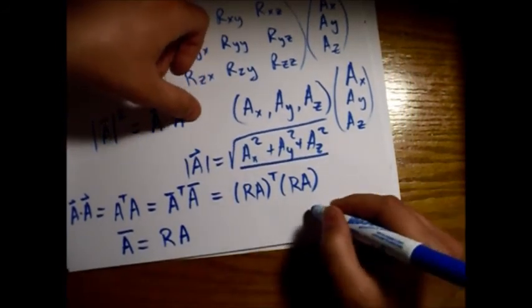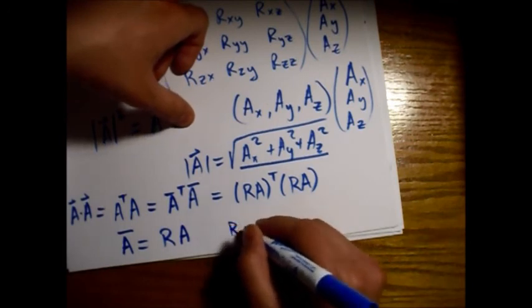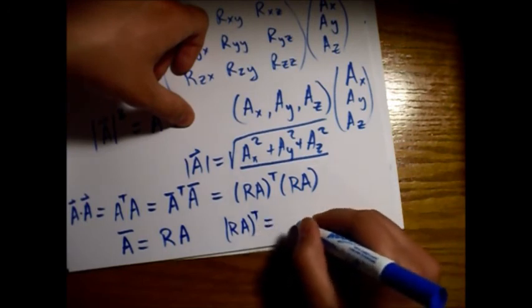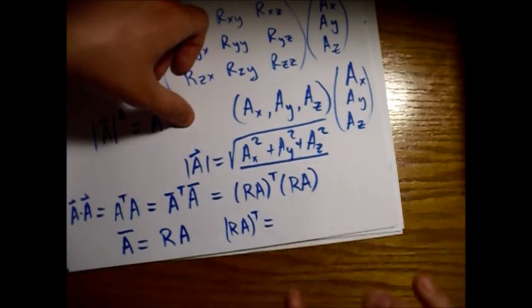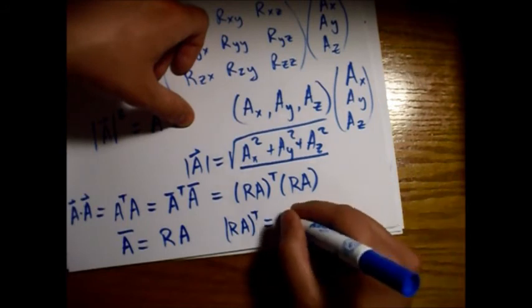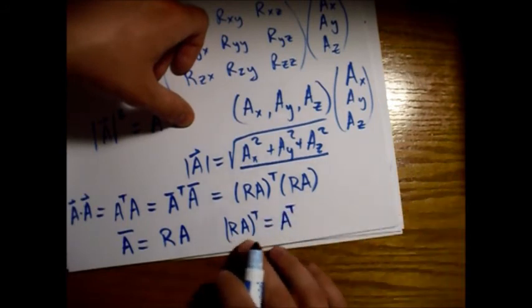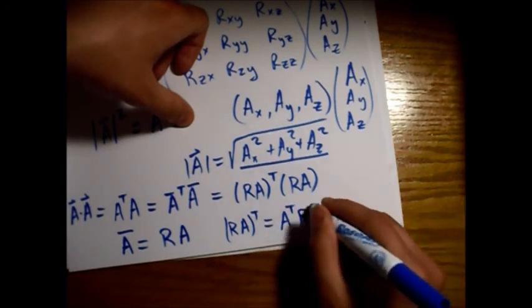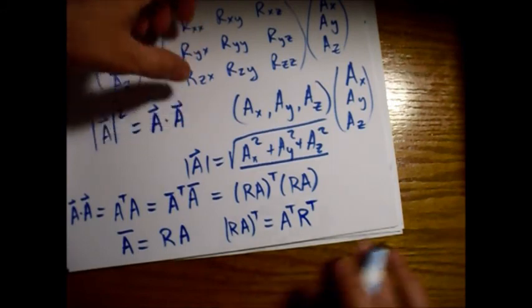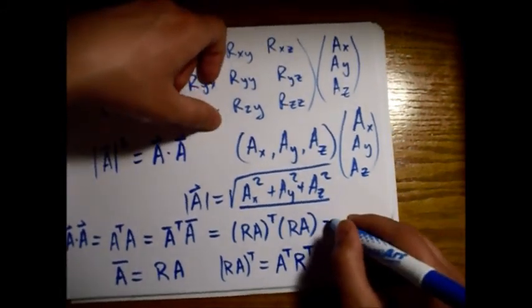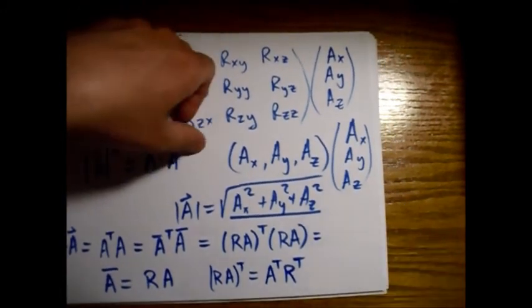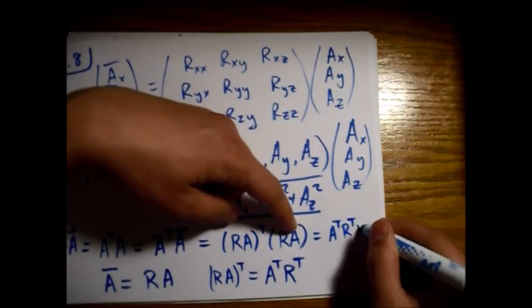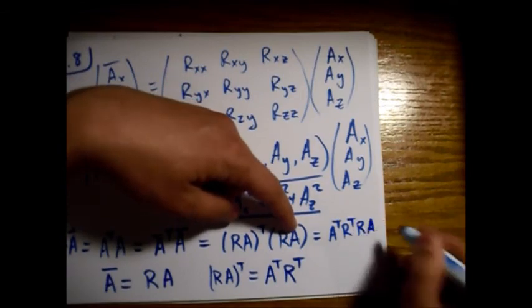Alright, so one thing we know about matrices is, if we have RA transpose, that is equal to R transpose A, except we flip the order. So R transpose A transpose is the same, except we flip the order. So it's A transpose R transpose, like that. Alright, so this is actually equal to A transpose R transpose, and then RA. Like this.